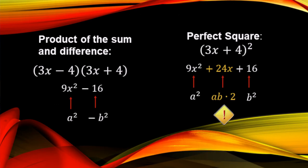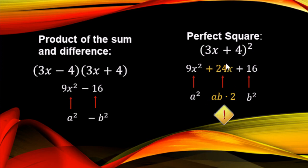So with our special products: when we have the same numbers but one's a plus and one's a minus, there's going to be no middle term — just take the first number and square it to get 9x squared, and take the last number and square it, making sure it's minus 16. And for your perfect squares, remember: square the first term, square the last term to get 16, and don't forget about the middle part — multiply the two numbers and double it: 3 times 4 is 12, doubled makes 24.